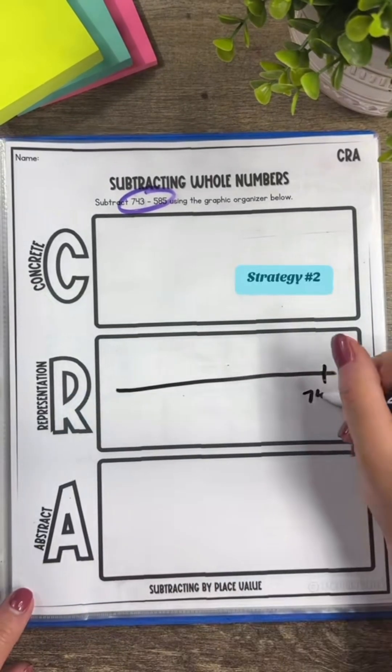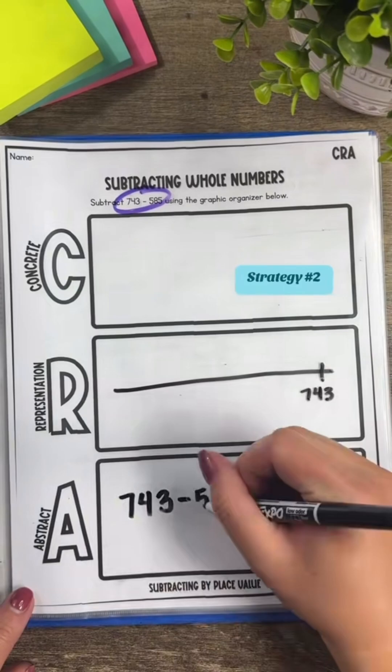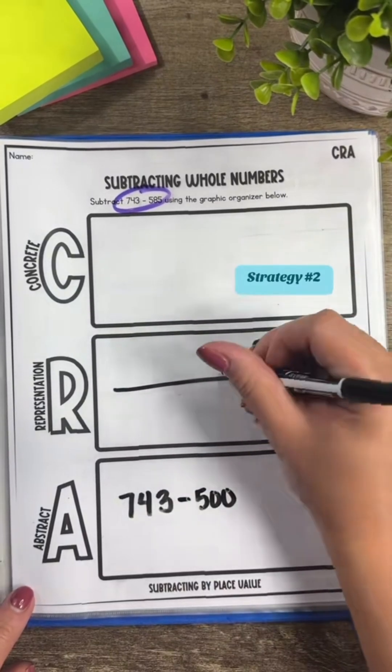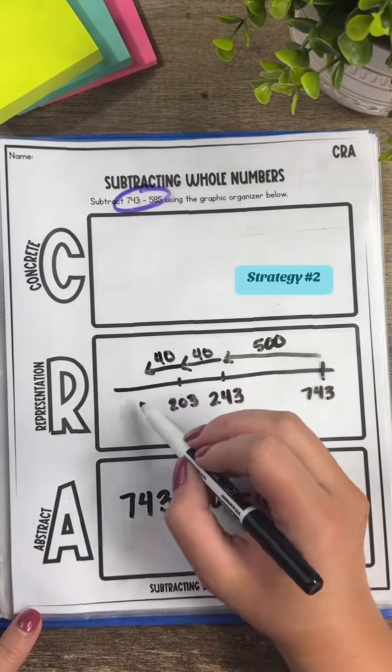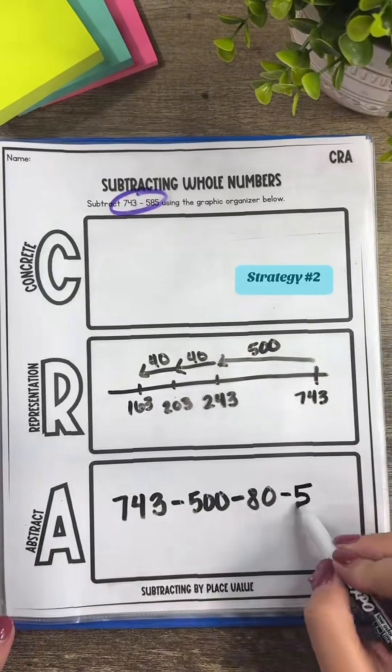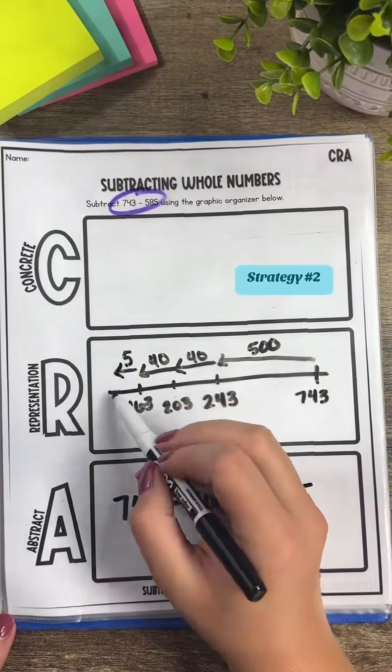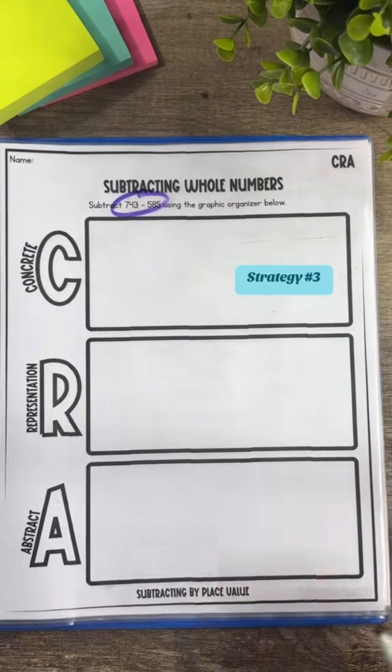Now let's drop the regrouping and use a number line. Using a number line there's a couple of different approaches that you could use. We're essentially just finding the distance on a number line. We could start at 585 and add up to subtract to find the difference, or in this case we can start at 743 and count back.